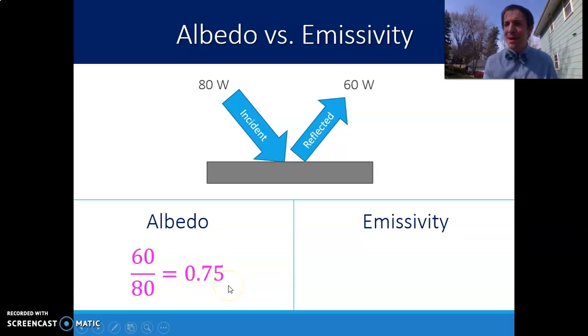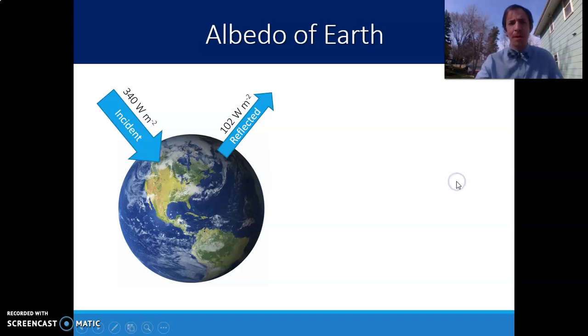From that, what would you expect the emissivity would be if emissivity is just the opposite of albedo? If they have to add up to 1, and emissivity is a percent that's absorbed, it's just going to be whatever is left over. So in this case, the 20 that was absorbed, that wasn't reflected, gets divided by the total of 80 to give you 0.25. Same thing as 25% absorption.